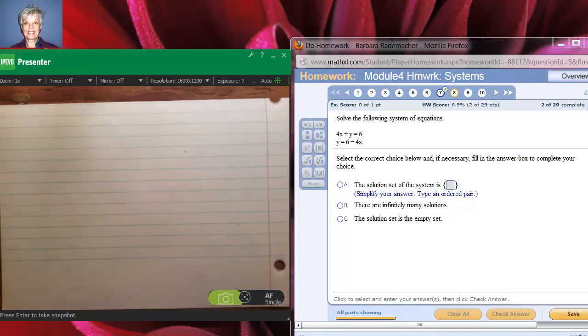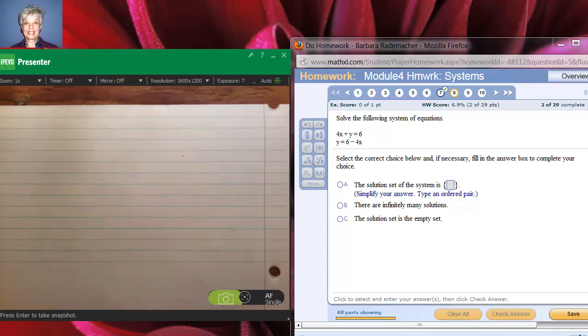Hi, this is your teacher, Barbara Rademacher, and we are now going to solve two of the more unusual systems by substitution. Line 1 is 4x plus y equals 6, and line 2 is y equals 6 minus 4x. Notice that line 2 is already set up for us to use substitution.